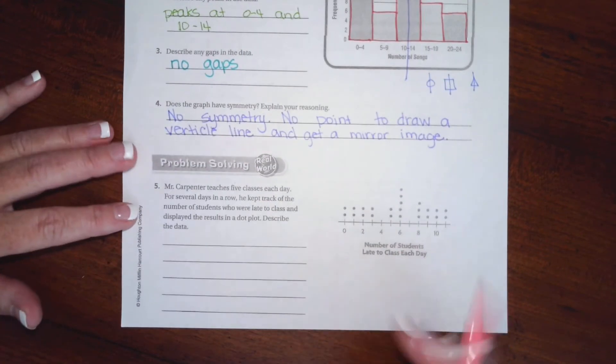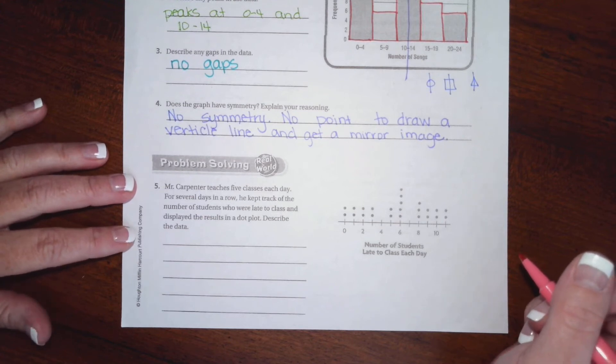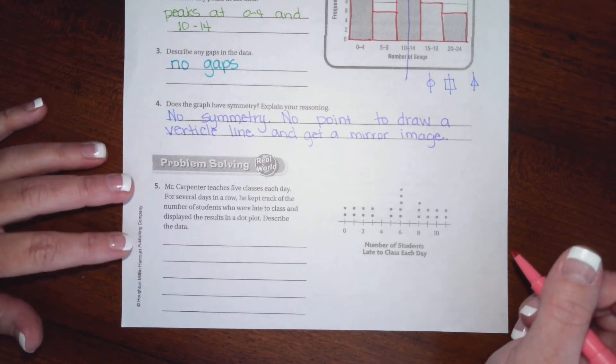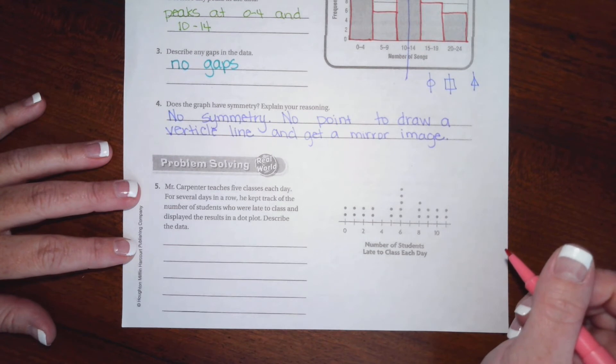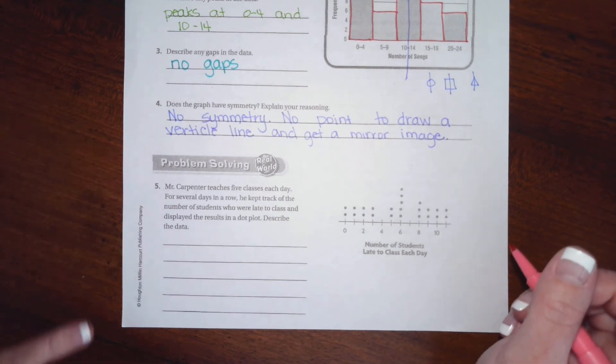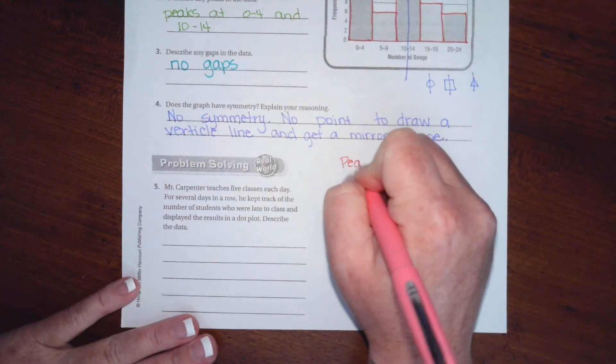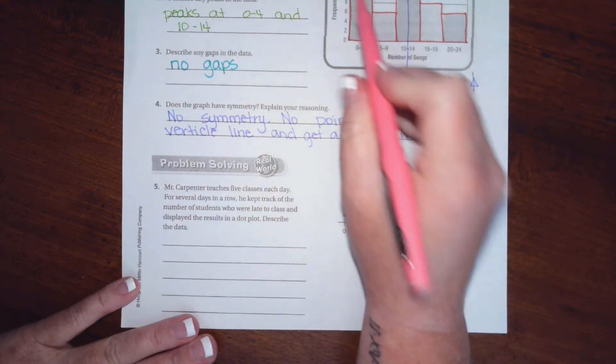Mr. Carpenter teaches five classes each day. For several days in a row, he kept track of the number of students who were late in the class and displayed the results on a dot plot. He's got the data. So we're going to look for peaks, where do you see peaks in the data, just like the little mountain tops over here.